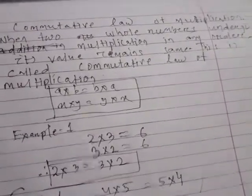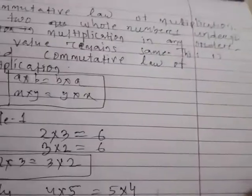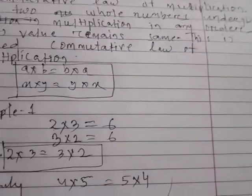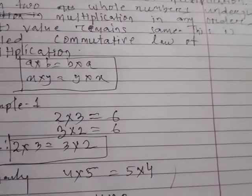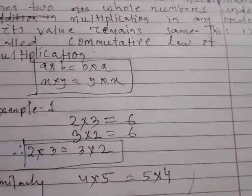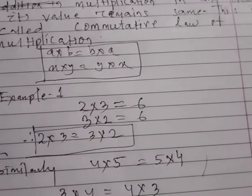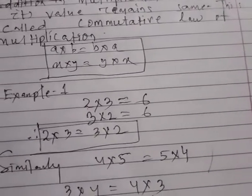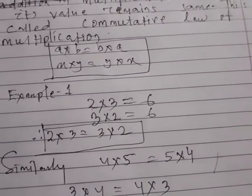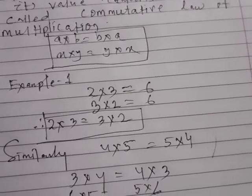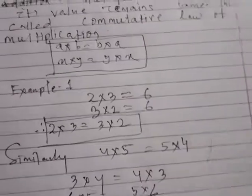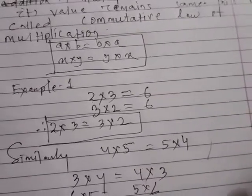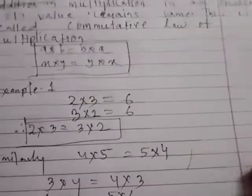So 2 times 3 is 6 and 3 times 2 is 6, hence 2 times 3 is equal to 3 times 2. This is the commutative law of multiplication — multiplication always obeys commutative law. Now let us discuss the commutative law of subtraction.